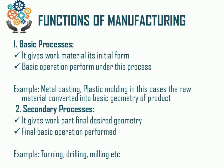The secondary process gives the work part a final design geometry. In basic processes, the initial form is given to the raw material. In secondary processes, we give the desired geometry or required dimensions to the in-process material. For example, turning, drilling, and milling operations — these are machining operations performed in secondary processes.